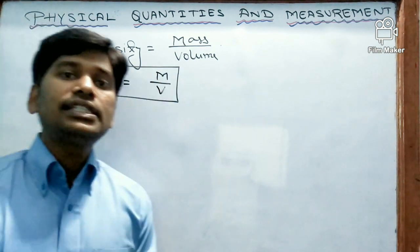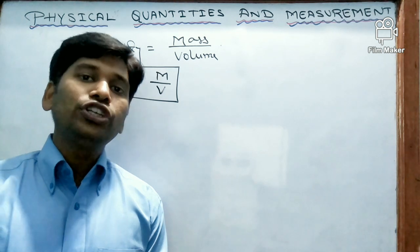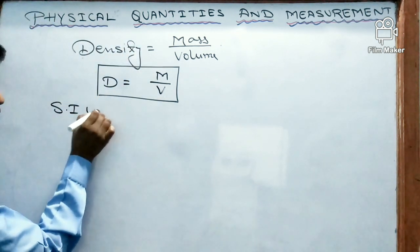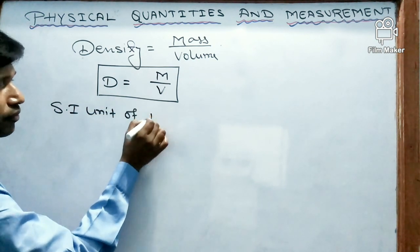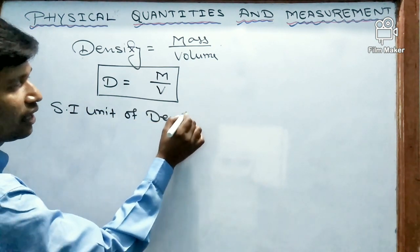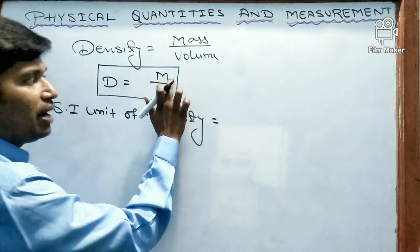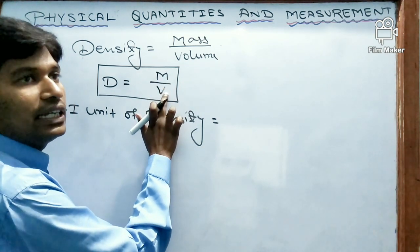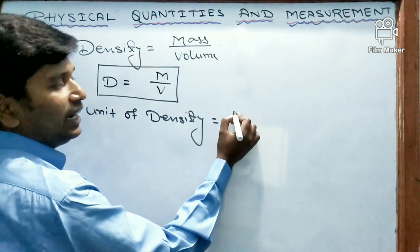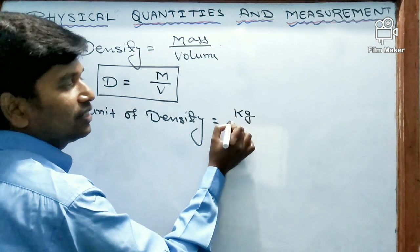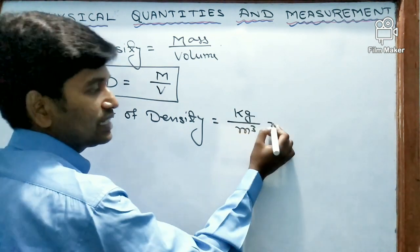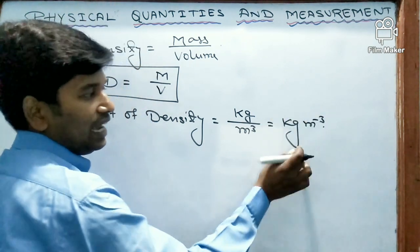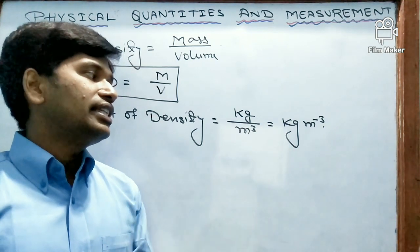Now let us see the SI unit of density. As we know, mass is measured in kilogram and volume is measured in meter cube. So we can write kg per meter cube — this is the SI unit of density.